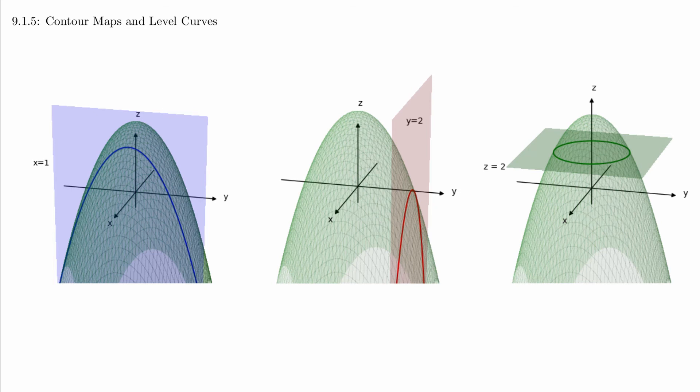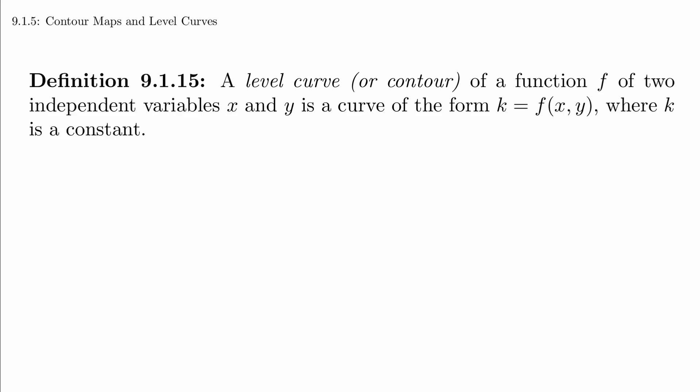Here's the formal definition. A level curve, or a contour, of a function f of two independent variables x and y is a curve of the form k equals f of x,y, where k is a constant.